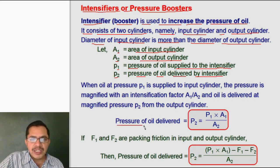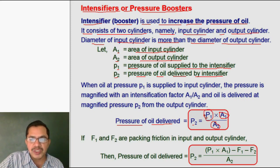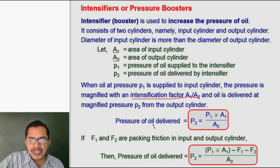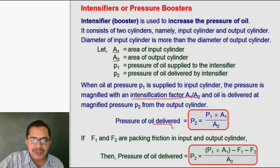The pressure of oil delivered, that is P2, will be A1 by A2 — the intensification factor — multiplied by P1, the pressure of oil supplied to the input cylinder. Since A1 is more and A2 is less, the ratio A1 by A2 is called the intensification factor and it is greater than 1. Hence the pressure of oil delivered will be more than the pressure of oil supplied to the intensifier.